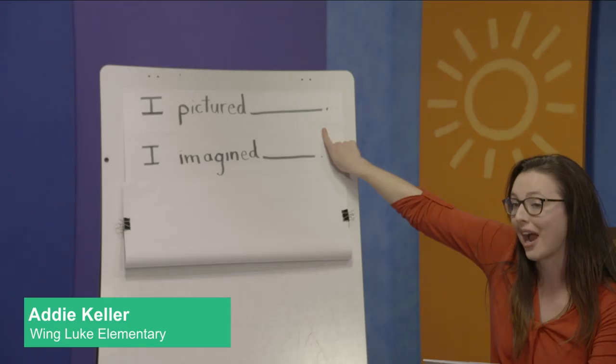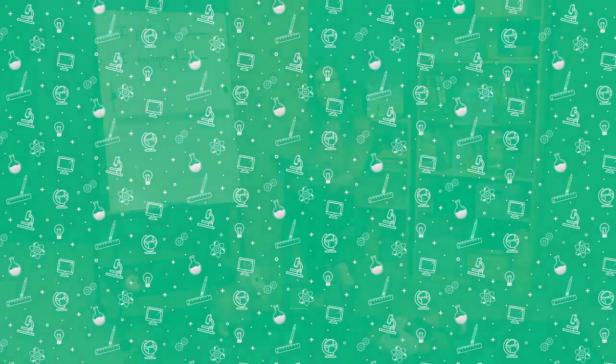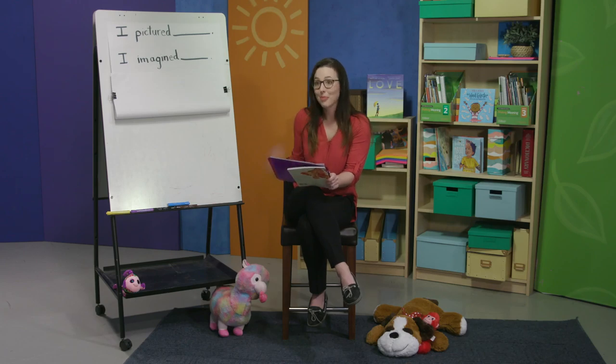Go ahead and share your visualization with your partner now. When I shared with my partners about the dolphin, I imagined it being smooth and slippery, gray, with a pointed nose and fins and flippers. I imagined the dolphin moving fast through the water, like up and down. I wonder if maybe you imagined something similar or different. It's okay if we have different pictures in our minds, because we all have different experiences in our lives.